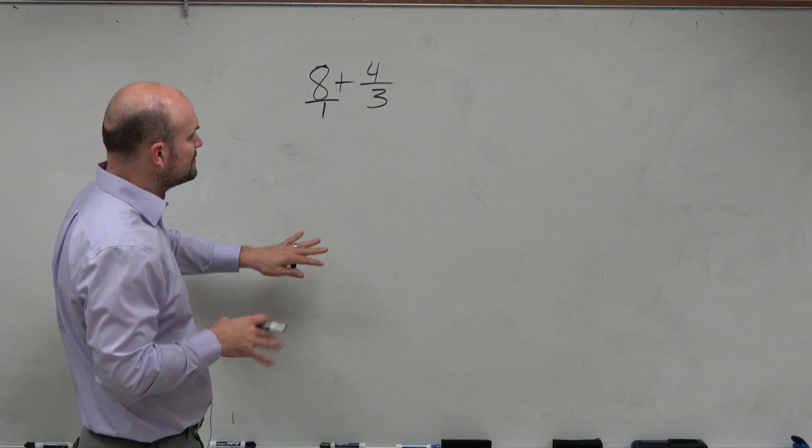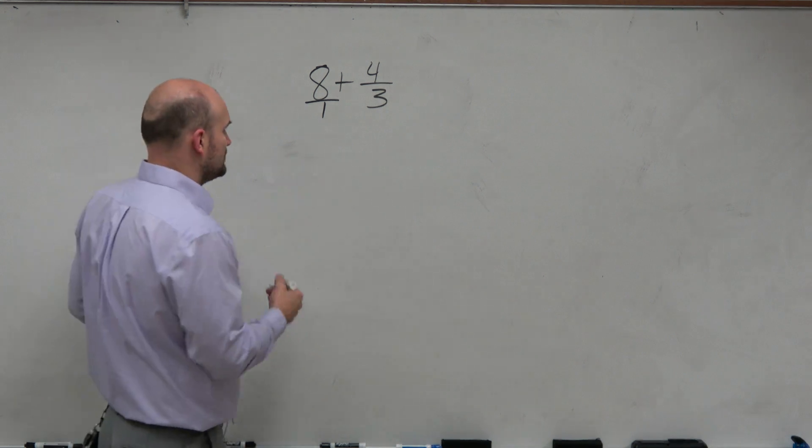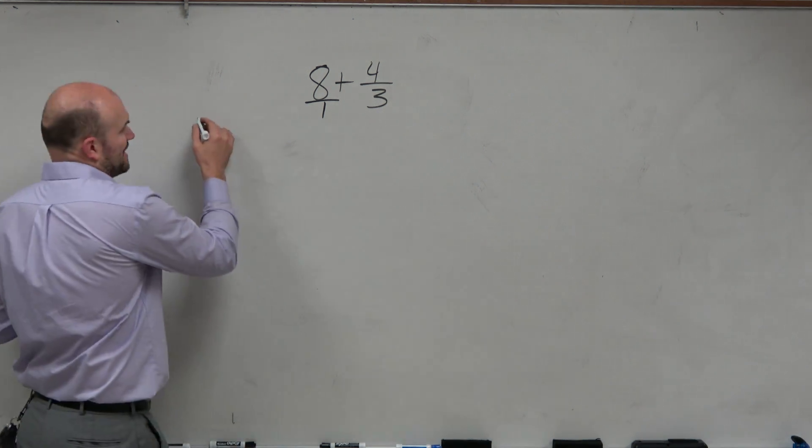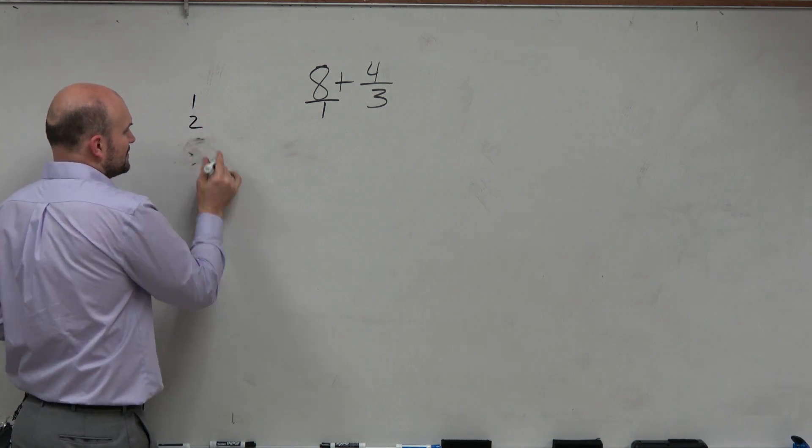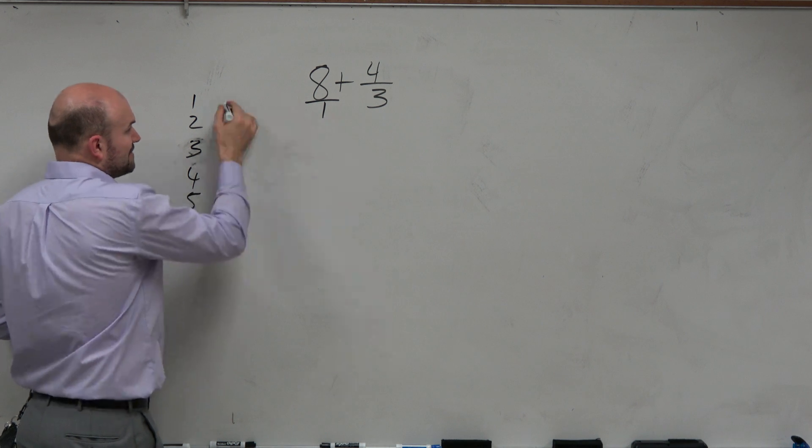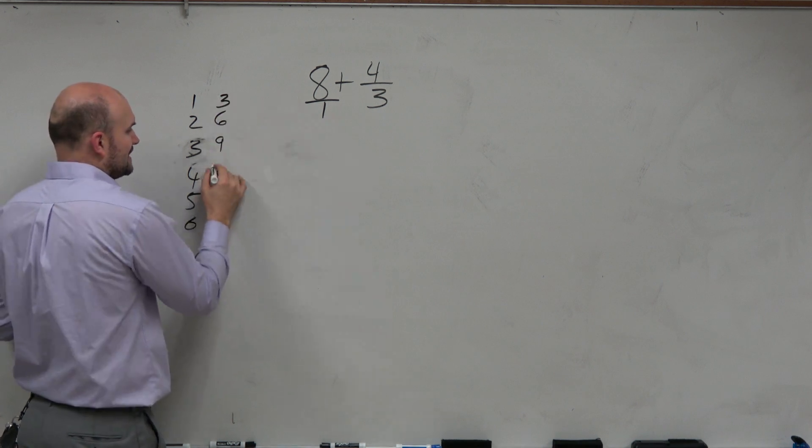And so what we do to identify the common denominators, we're looking for the common multiples. And again, you can think about that just by counting by 1's. That's supposed to be a 3. 3, 4, 5, 6, and then counting by 3's. 3, 6, 9, 12.